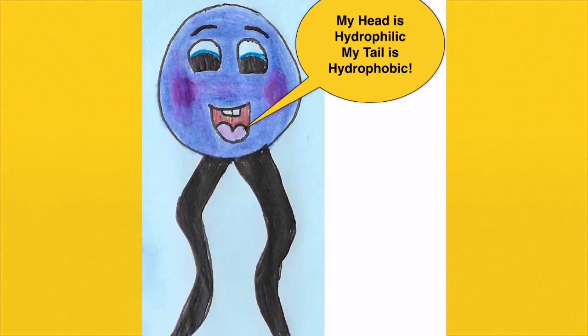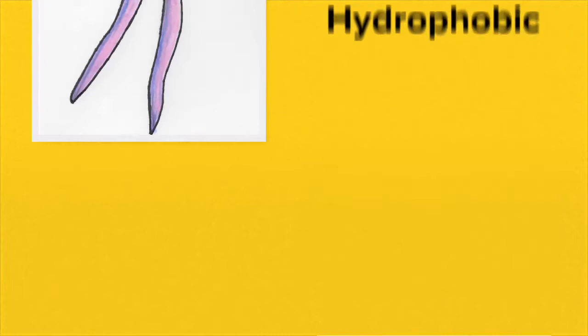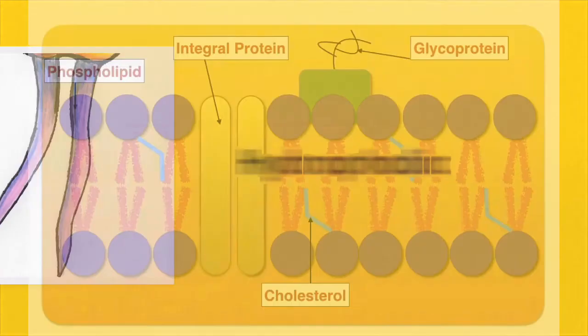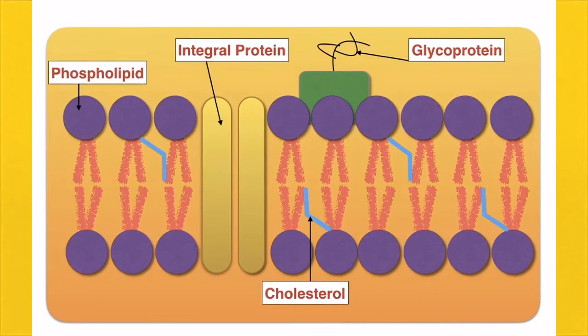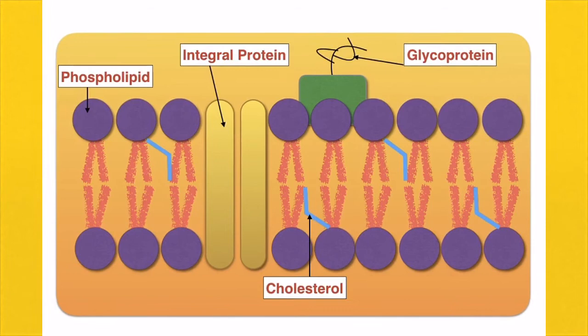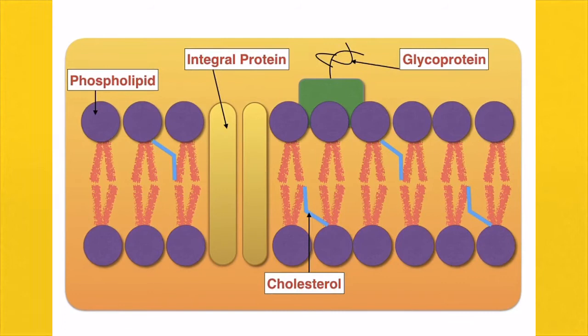The head is hydrophilic — 'philic' meaning liking — it likes water. The tail is hydrophobic; it does not like water. Having a hydrophilic head and a hydrophobic tail means that if you pour many phospholipids onto water, they arrange themselves with the heads out and the tails in. This is how phospholipids arrange themselves into the bilayer.